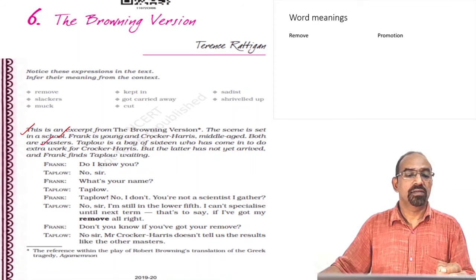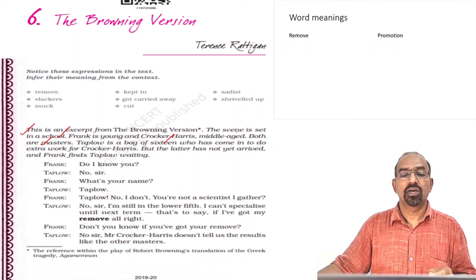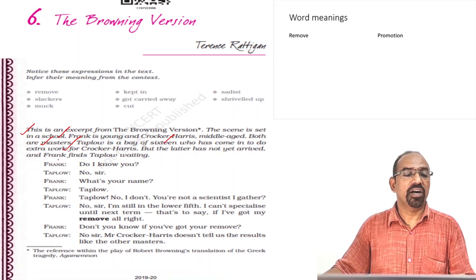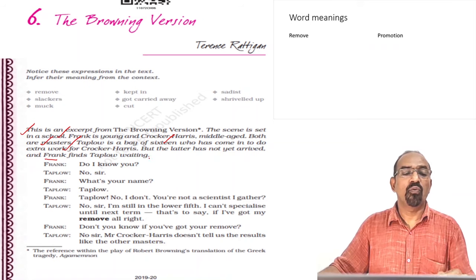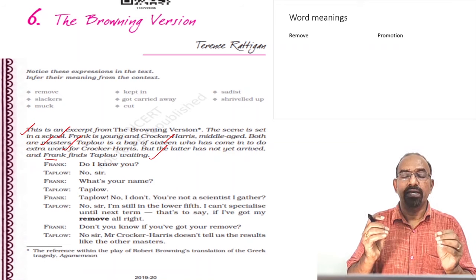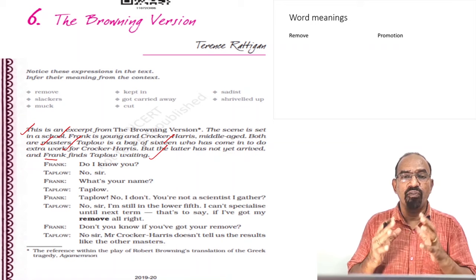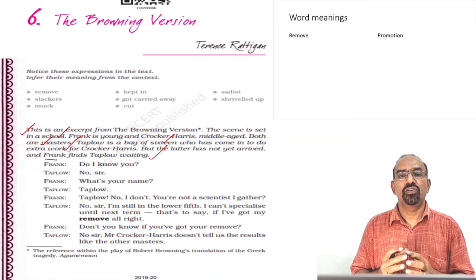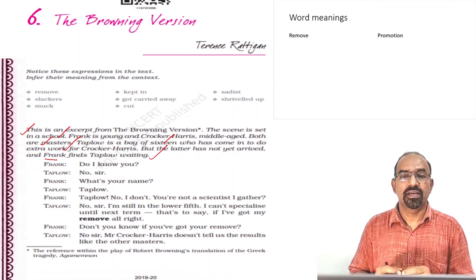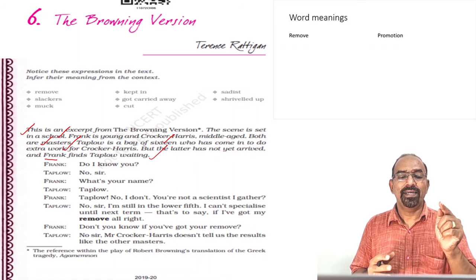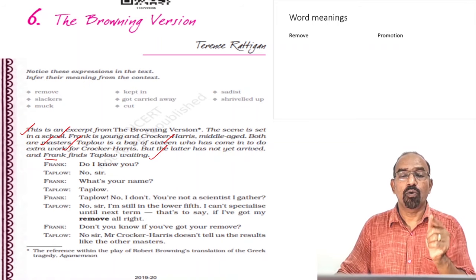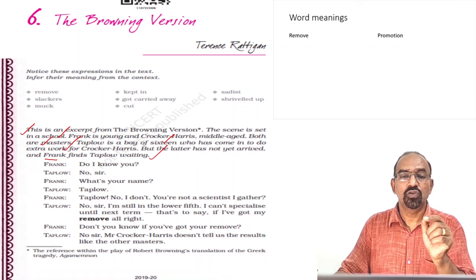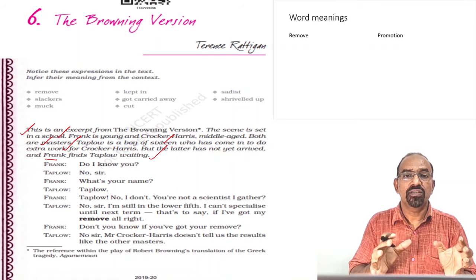Frank is young and Crocker-Harris is middle-aged. Both are masters. Taplow is a boy of 16 who has come in to do extra work for Crocker-Harris, but the latter has not yet arrived and Frank finds Taplow waiting. This drama takes place in a school where Frank, a young teacher, and Crocker-Harris, a middle-aged master, work. Taplow is 16 years old, waiting for Crocker-Harris his master to do some extra work. This is the situation in which the play starts.